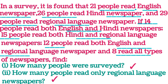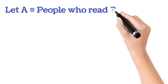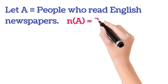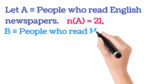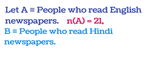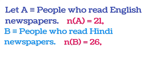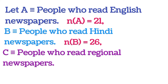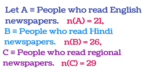Let's solve this question. We will assume that A represents the people who read English newspapers, so the number of people reading English newspaper is 21. Similarly, B represents people who read Hindi newspaper, so N(B) is 26, and C represents the people who read regional language newspapers, so the number of people who read regional paper is 29.